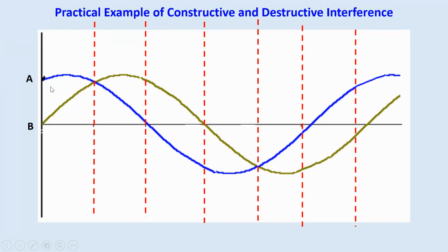We add the vertical displacement at every single vertical line. Starting with the first line: B is zero and A has a value, so this value plus zero is plotted as a point. Moving to the next line: both waves have vertical displacement — adding the green and blue values together approximately doubles the result. Then where the blue wave is at zero and the green is above equilibrium, we add zero plus the green value, giving that same value.